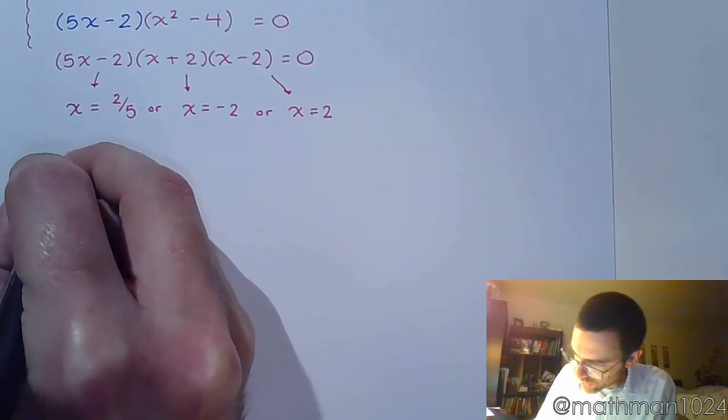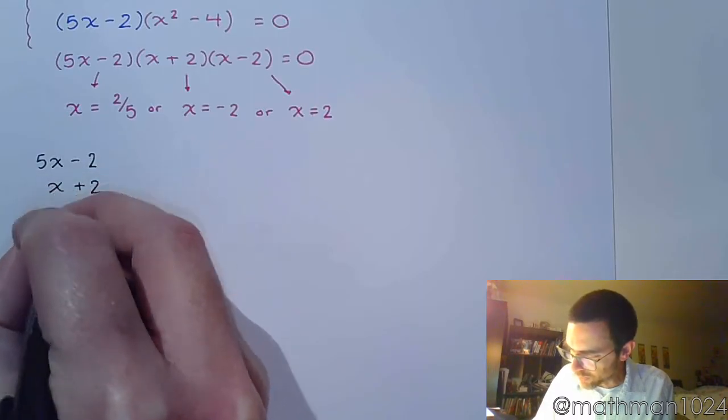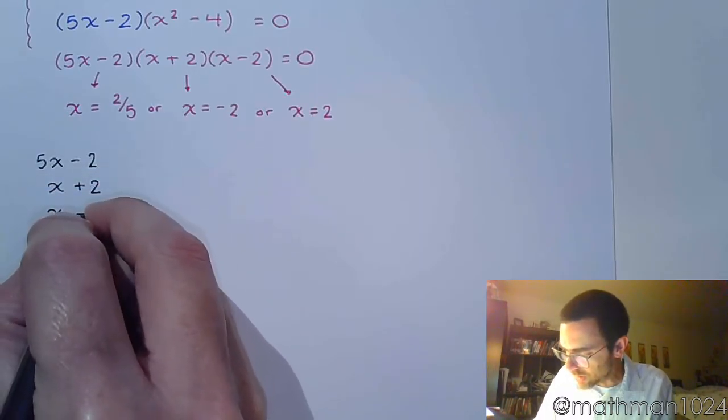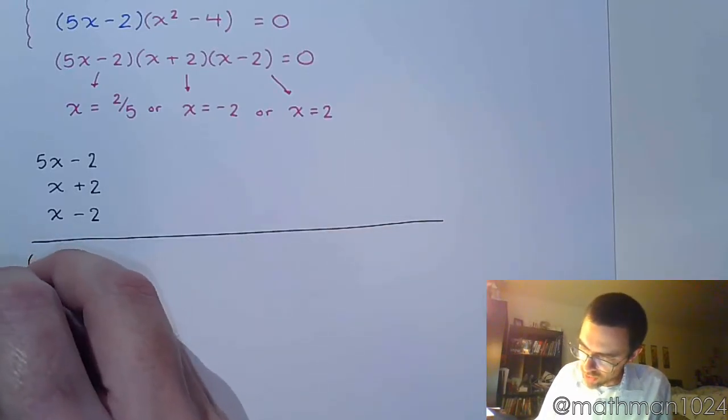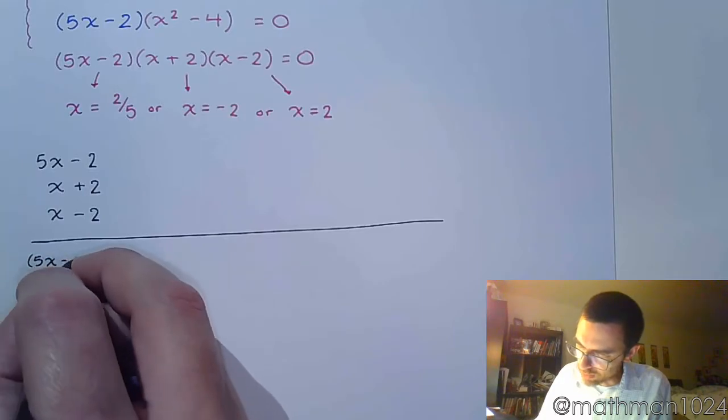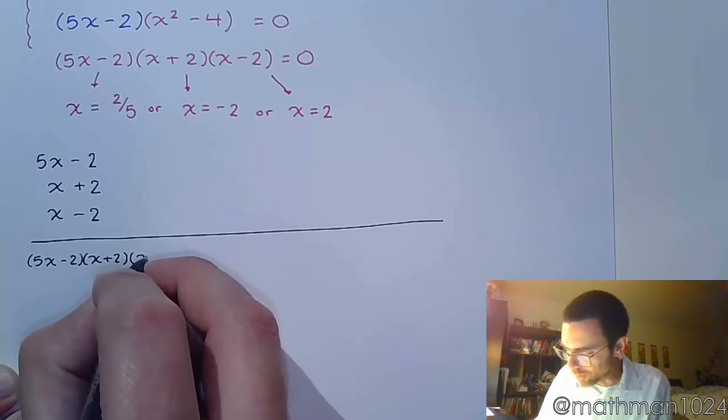So as we've done in the past, we take each factor on its own and we determine the sign pattern. And then we're going to see what happens when we put everything back together in the product that forms the polynomial.